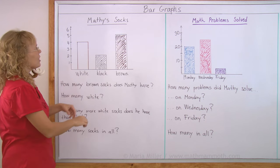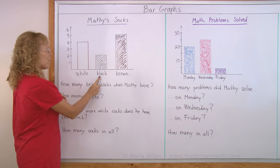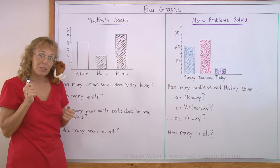The name of this graph is Matthew's socks - white, black and brown. He has white and black and brown socks, but how many? The graph will tell us.